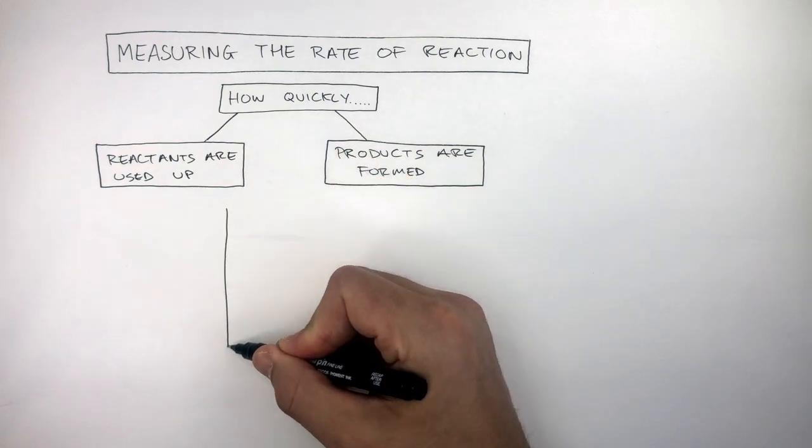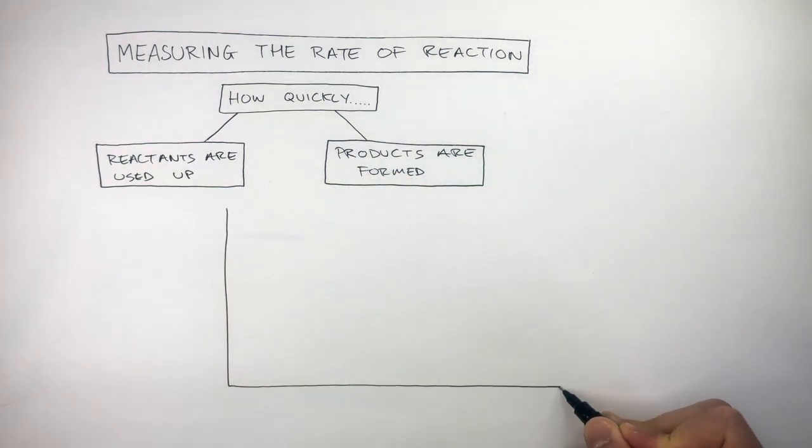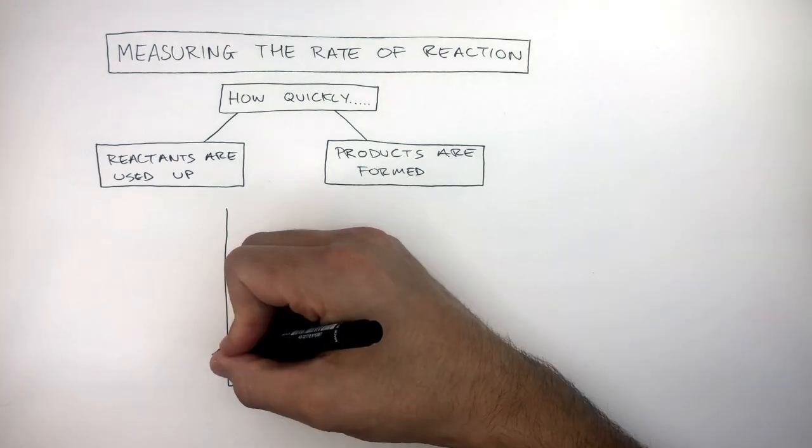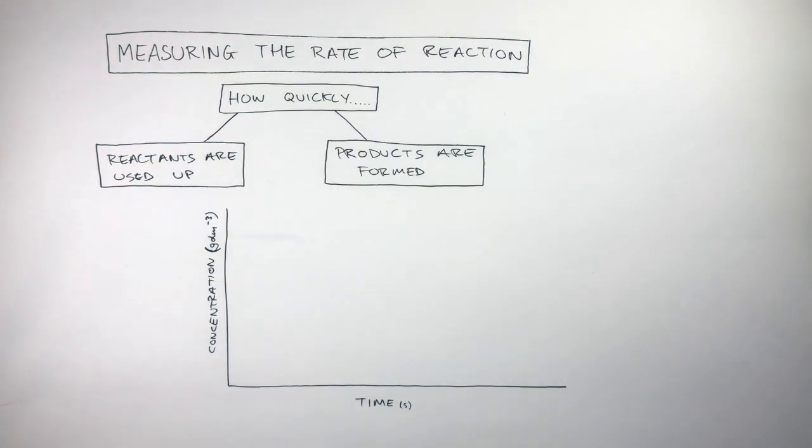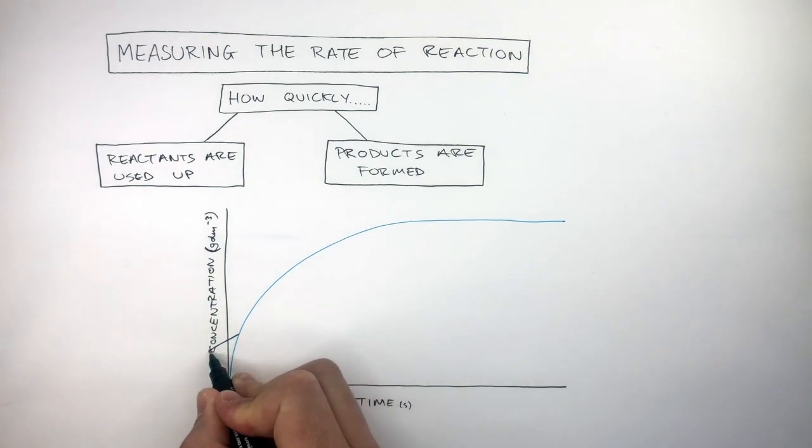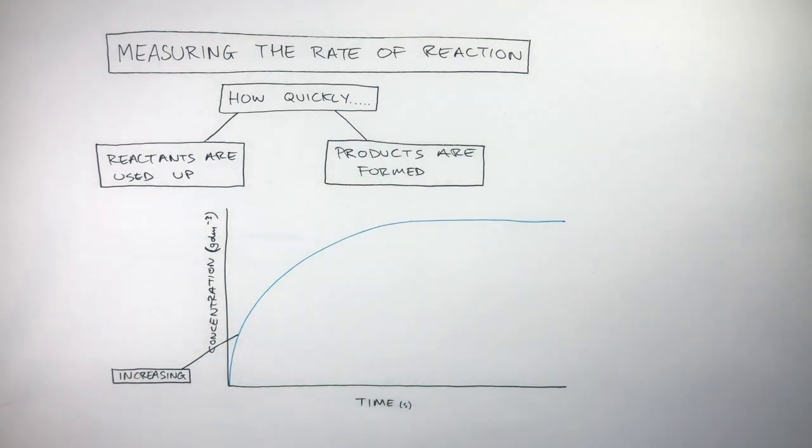We can show our results on a graph by plotting time in seconds on the x-axis and concentration in grams per decimetre cubed on the y-axis. We can see the blue line clearly shows the concentration increases with time. If you ever see a variable, such as concentration, increasing, this means products are forming. So, here we can write products.